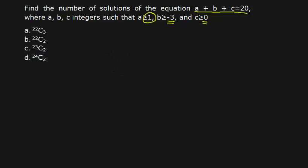In the previous video, we have seen how to solve such question if a plus b plus c is equal to 20 and all three a, b, c are greater than or equal to 0. That was as good as distributing 20 apples among three children. But now here the condition is different.